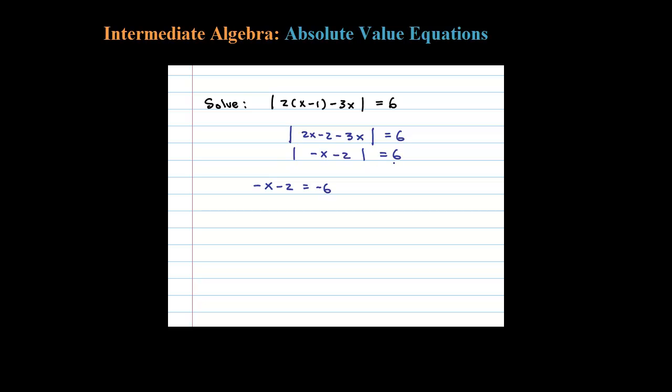Or the argument negative x minus 2 could equal 6. The absolute value of 6 is 6 as well. Okay, so we applied the theorem and now we have two linear equations to solve.